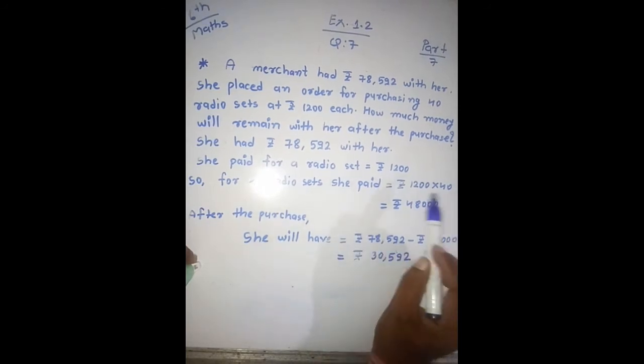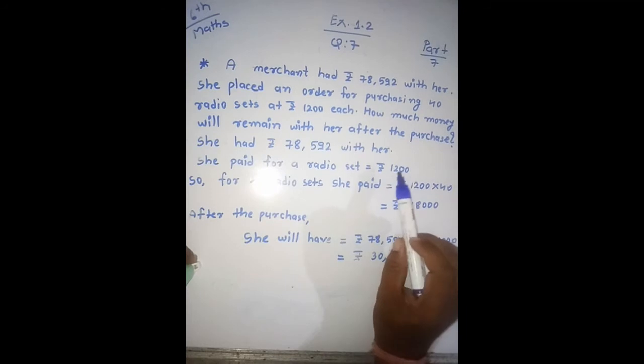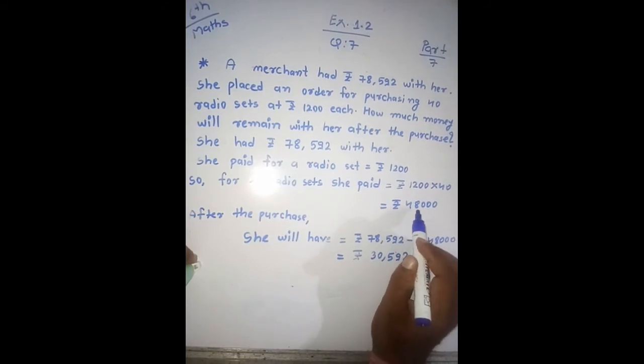She paid 1200 into 40, means 40 radios, one radio price. The price is 48,000, means 48,000. That is total.